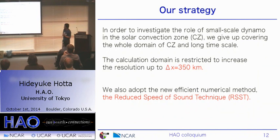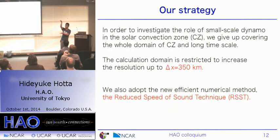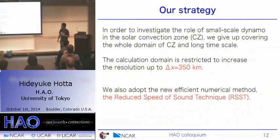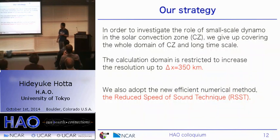My calculation domain is from the base of the convection zone to 96% of the solar interior, but I restrict the horizontal extent of my calculation box. We then increase the resolution to delta x equal to 350 kilometers — almost 20 times smaller grid size.